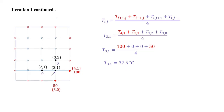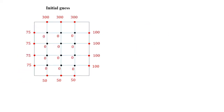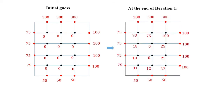We have to repeat this process for all intermediate nodes, giving us the temperature distribution after the first iteration. This was the initial guess we started with, and at the end these are the temperature values after iteration 1. Please note that the actual values have decimal points, but for simple representation I have used rounded values. The important question now is: have we reached the final solution? The rule to decide this is to check the numerical error.